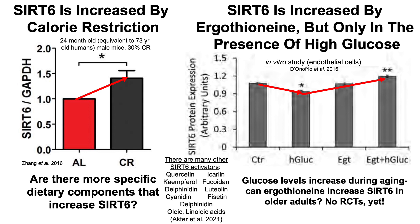There are many other SIRT6 activators. Notably, quercetin and luteolin are known CD38 inhibitors involved in mechanisms that increase NAD, and they are also SIRT6 activators — providing a double benefit of higher NAD and higher SIRT6 activity.